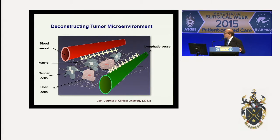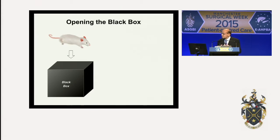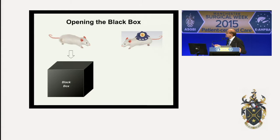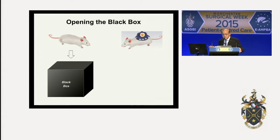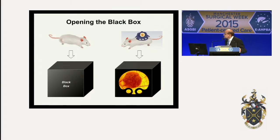Our laboratory has been looking at each component of this tumor microenvironment using what is known as intravital microscopy. This approach allows us to open the black box of what's inside the tumor. We visualize events inside a tumor by placing a glass window on top of these tumors — windows in the back skin of a mouse to look at melanomas, on the brain for glioblastoma or brain metastases, on the breast for breast cancer, on the liver for HCC, and on the pancreas for pancreatic cancer.